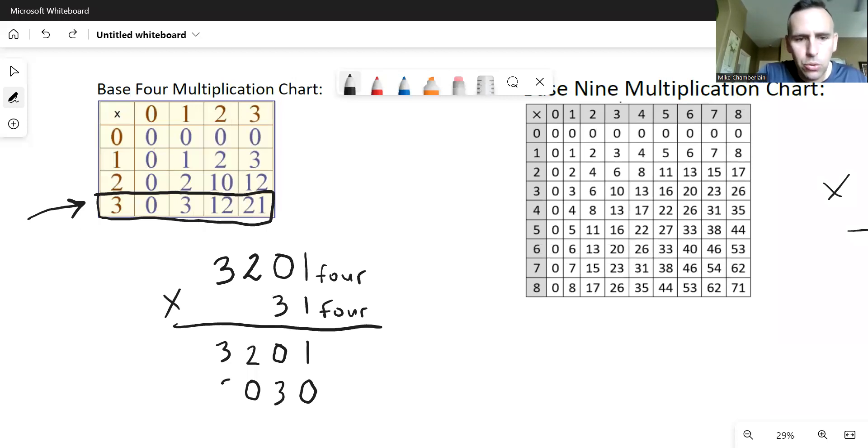So that's what I write, carry the one. Now I have three times three. Here is two, one in the bottom corner. But remember the one we carried. Two, one and one more is two, two. So I write the number two, two down. Let's add those together in base four and get our final answer.